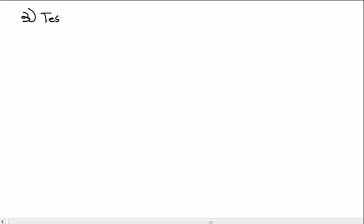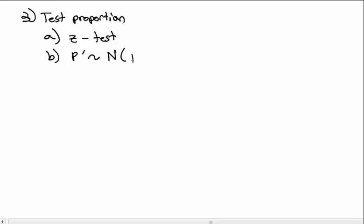We can also test a proportion using a z-test, where p-hat is normally distributed with mean p and standard deviation equal to the square root of pq divided by n. The z-statistic is z equals p-hat minus p over the standard error — the square root of pq over n based on our sample size.